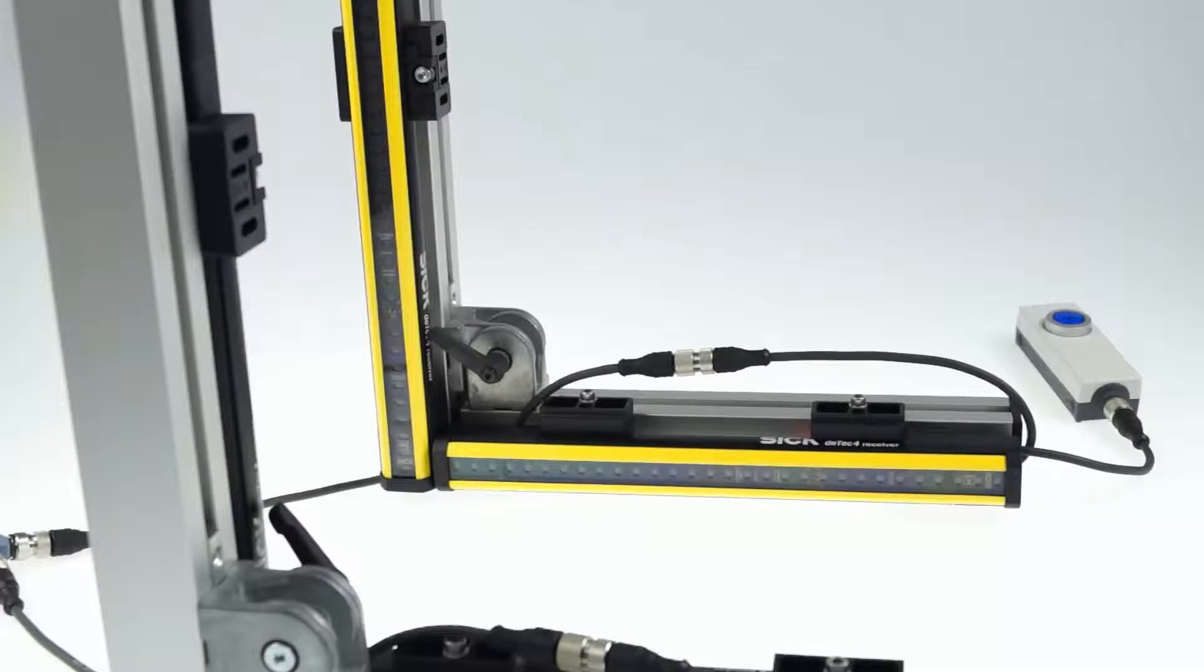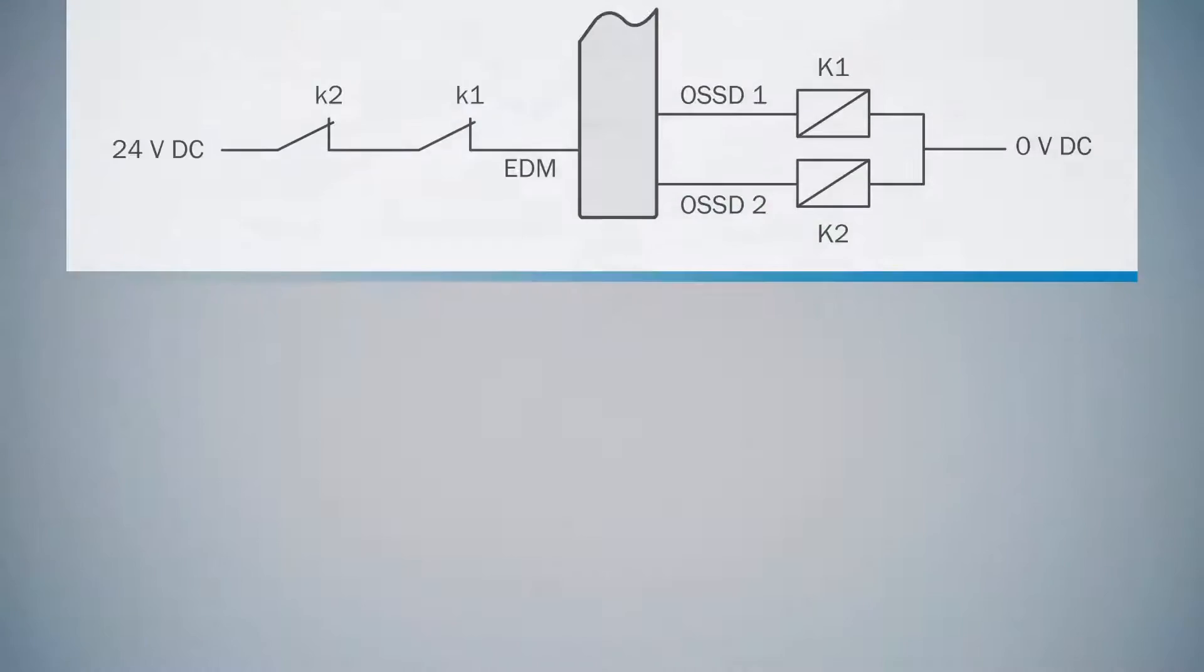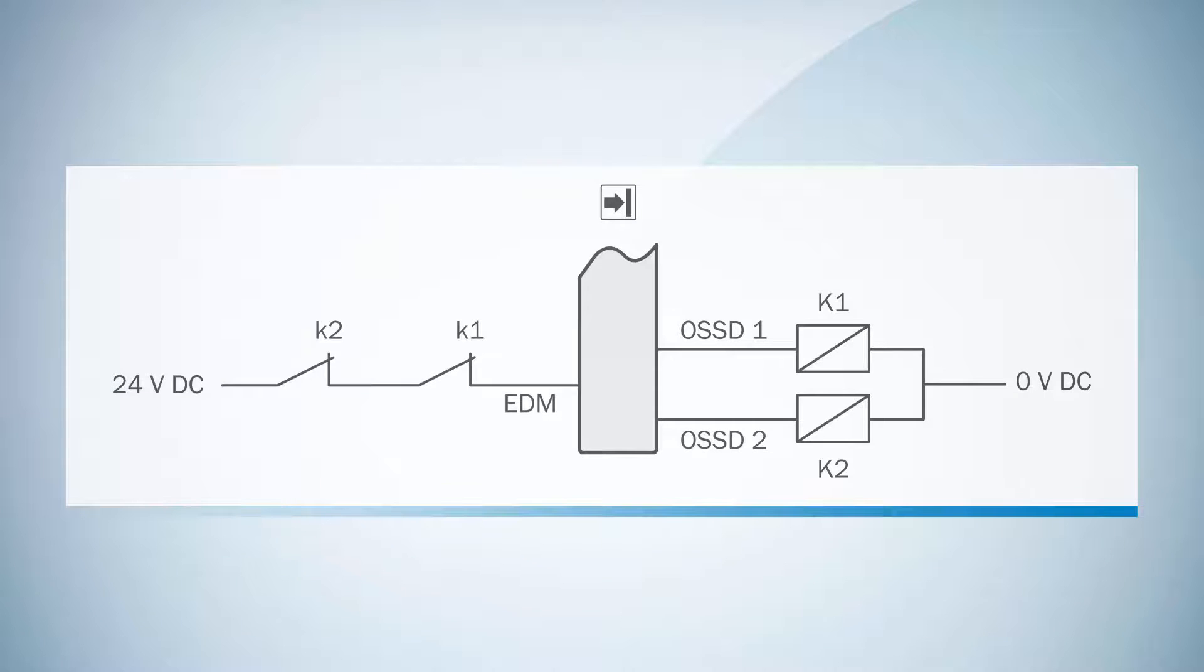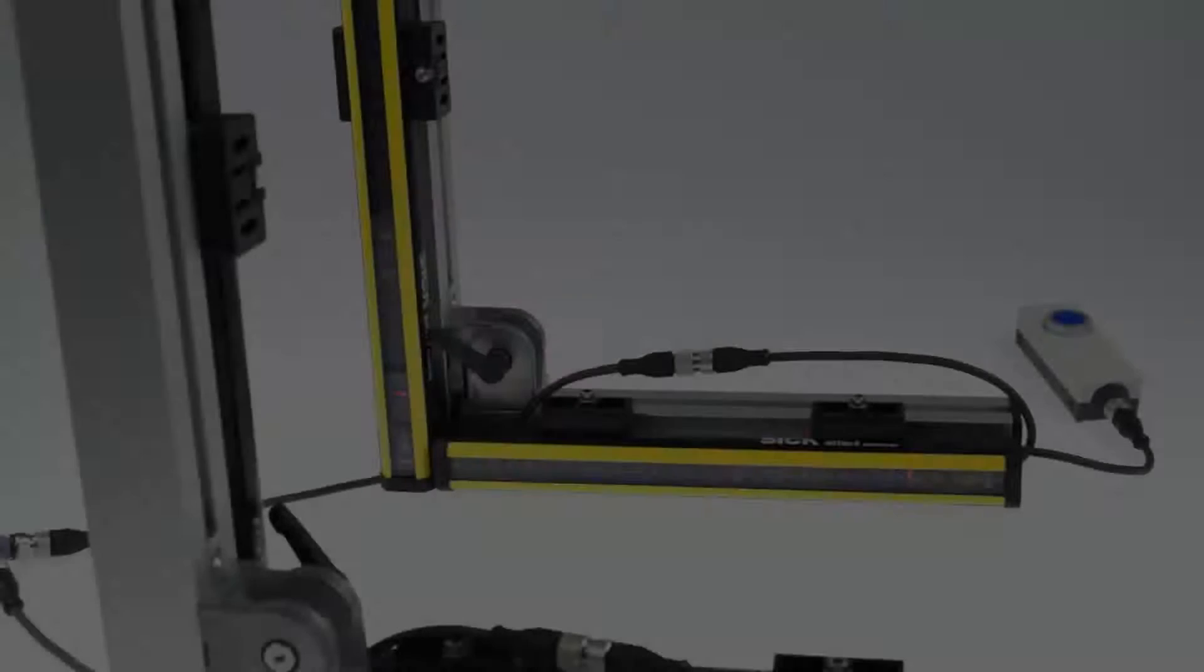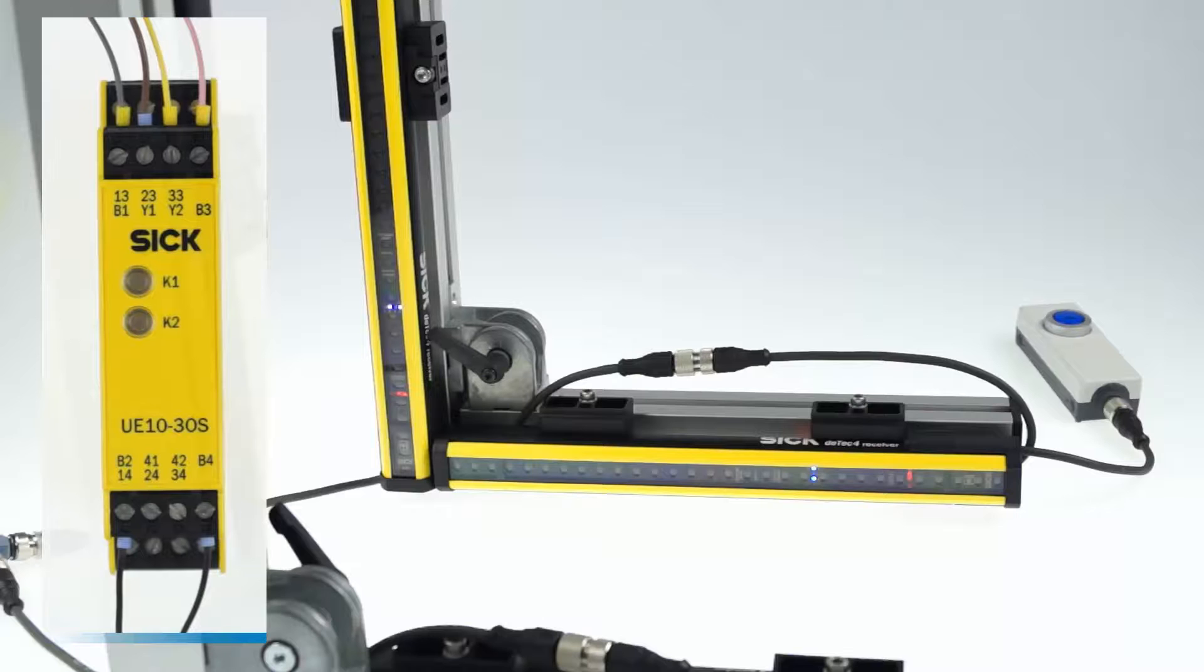The external device monitoring, or EDM for short, of your system is also easily configured. In the default state EDM is deactivated. Simply wire everything accordingly to the operating instructions and on the next power-up, the DTEK 4 will automatically switch into the configuration mode,